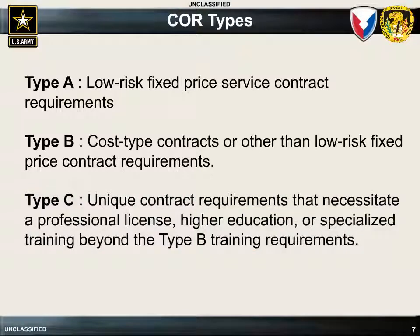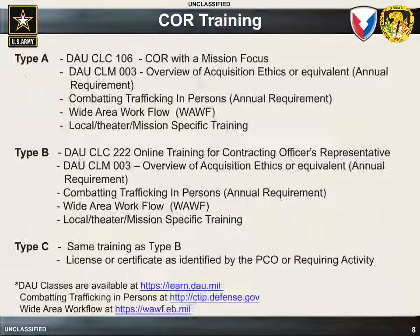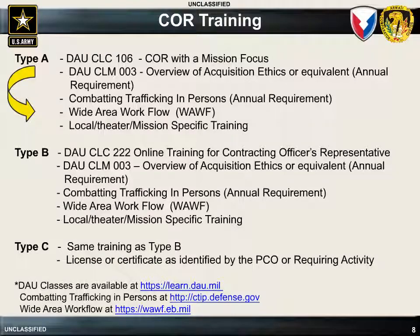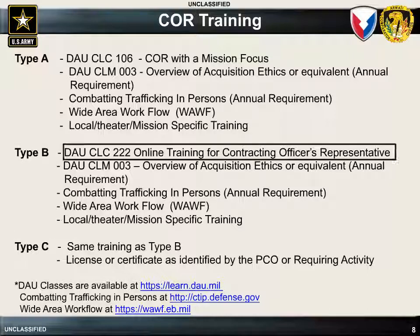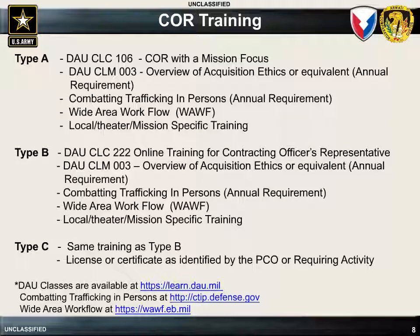The training requirements will vary based on the Type COR required. The requirements for a Type A COR include DAU CLC 106, COR with the Mission Focus, DAU CLM 003, Overview of Acquisition Ethics, Combating Trafficking in Persons, Wide Area Workflow, and any Mission, Local, or Theater-specific training as specified by the PCO or requiring activity. The training for a Type B and C COR is essentially the same as that of the Type A COR, with the exception of the substitution of DAU CLC 222 Online Training for Contracting Officer Representatives in place of DAU CLC 106.